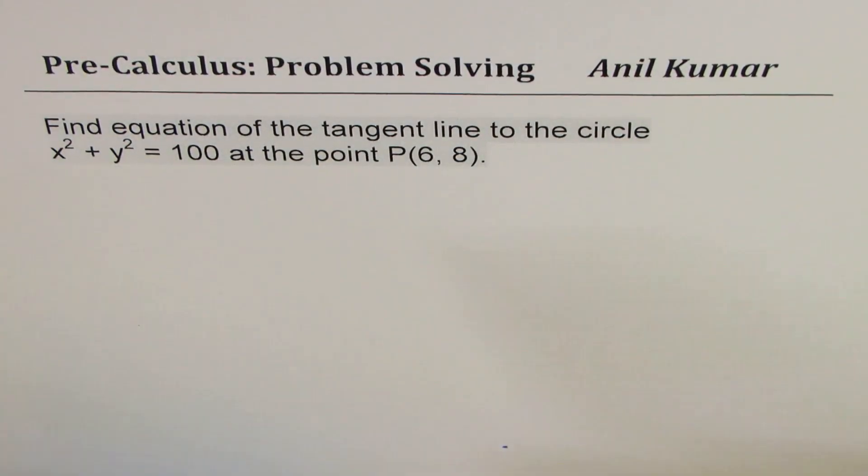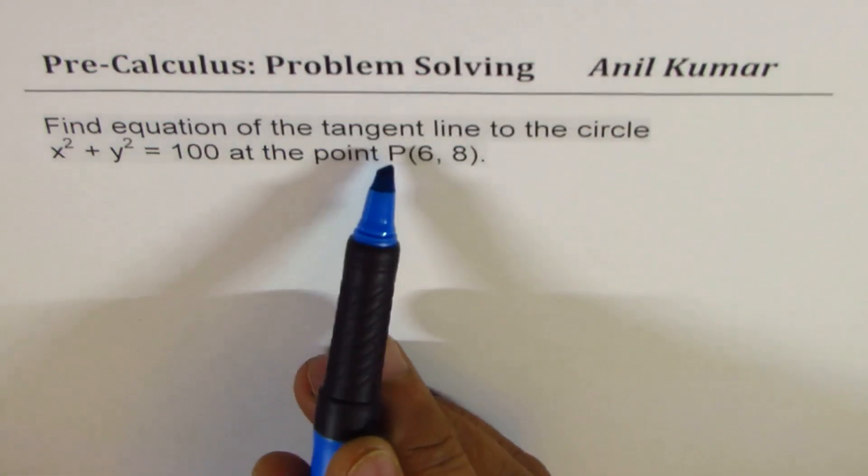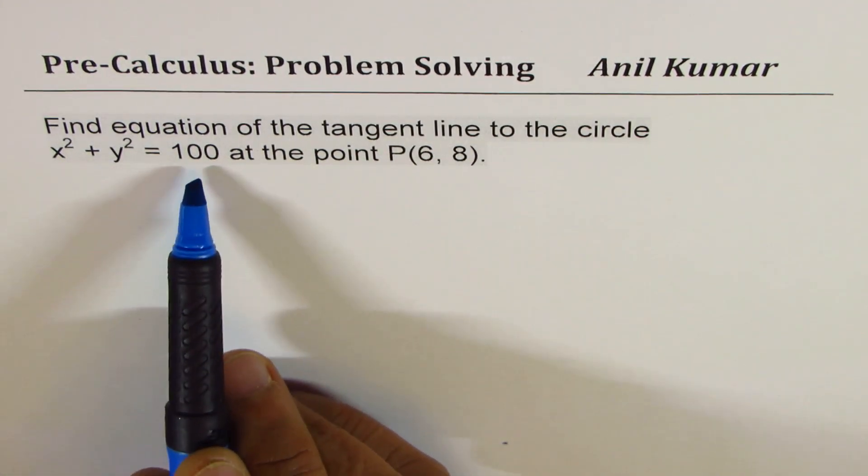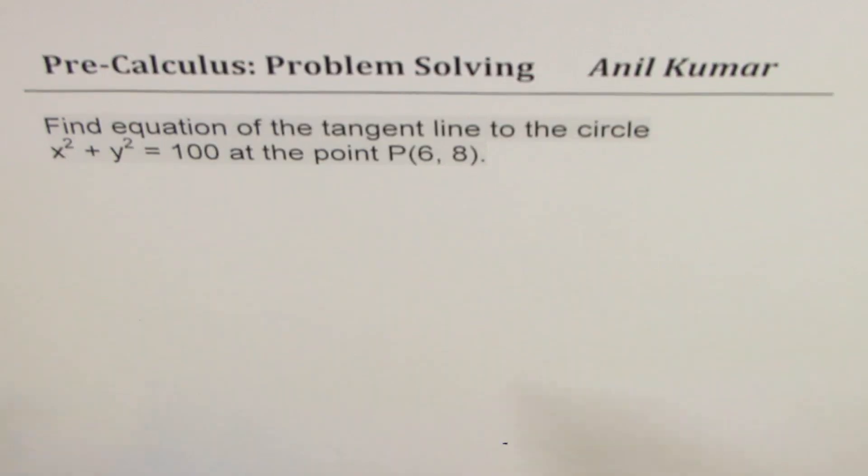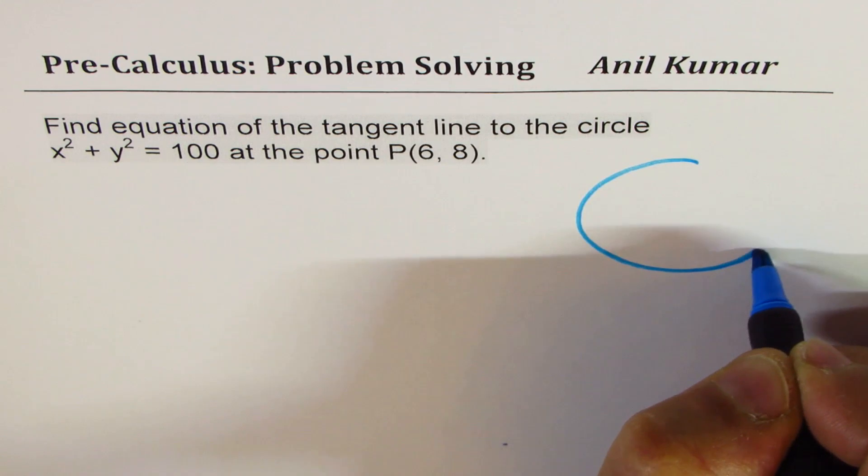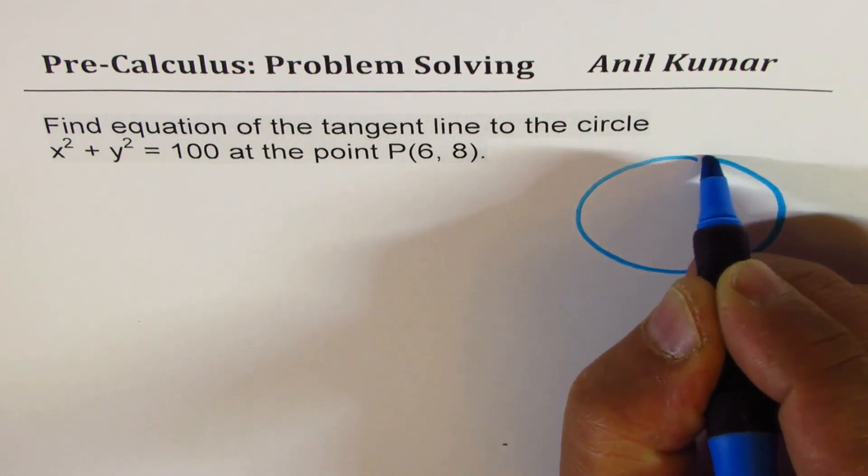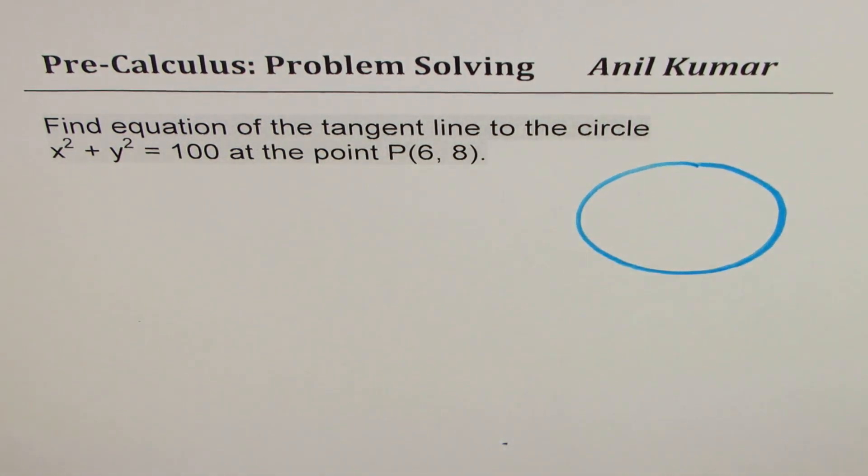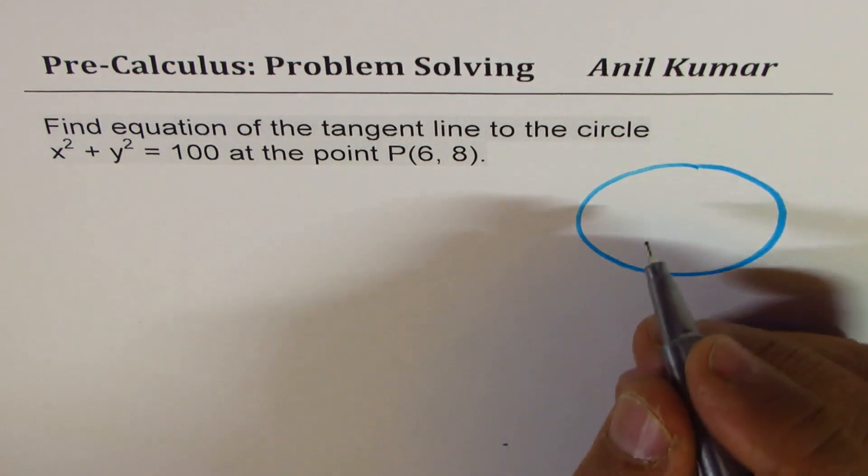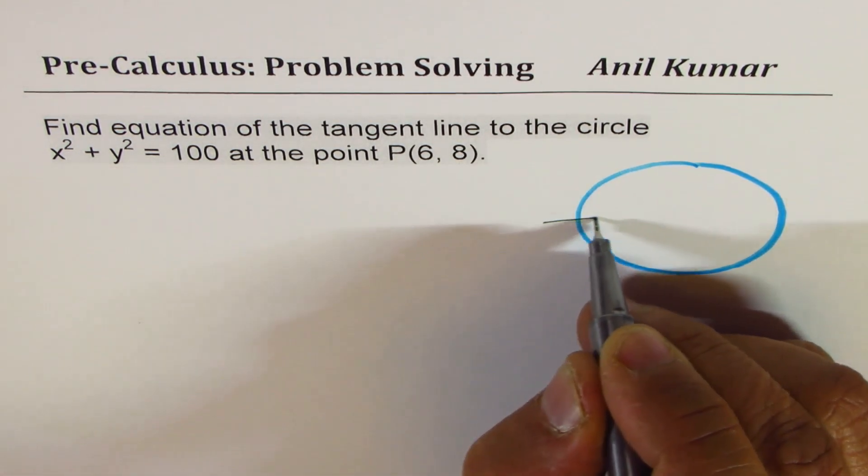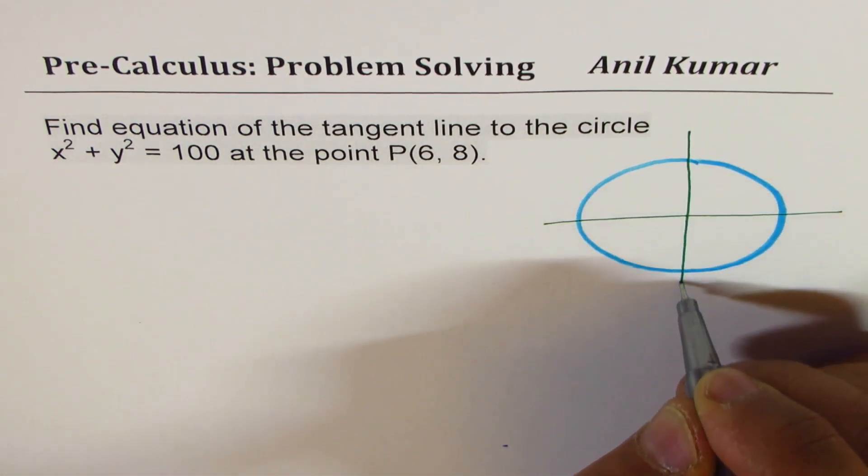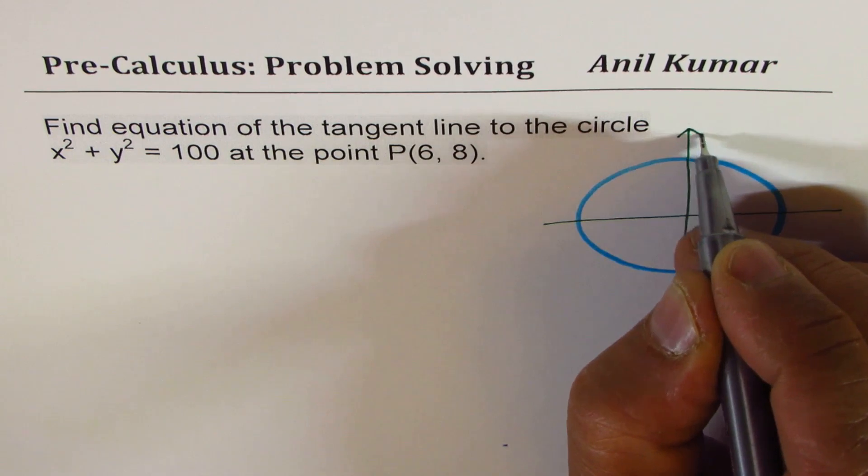So the question for us is, find equation of the tangent line to the circle x² + y² = 200 at the point P(6,8). So we can make a rough sketch here. In calculus, rough sketches are good enough. Don't waste your time making perfect drawings. You need to concentrate on solutions and thinking about getting the right solutions. In fact, effective solutions.